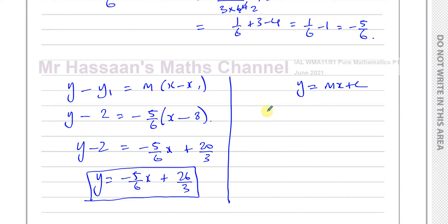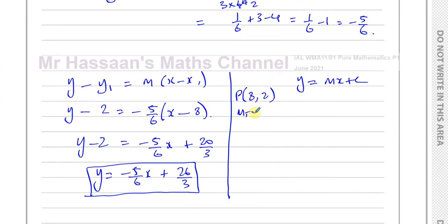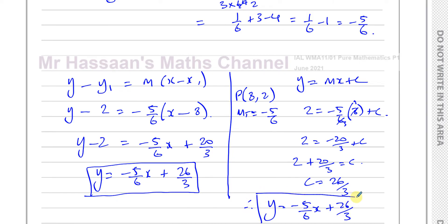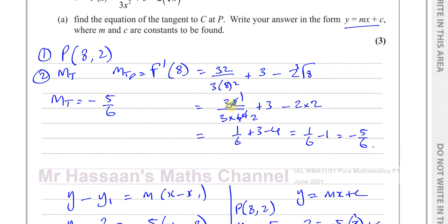Alternatively, using y = mx + c directly: we know P is (8, 2) and the gradient is −5/6. Substituting: 2 = −5/6 × 8 + c, so 2 = −20/3 + c, giving c = 2 + 20/3 = 6/3 + 20/3 = 26/3. Either method gives the same answer: y = −5/6 x + 26/3. Use whichever method you prefer.